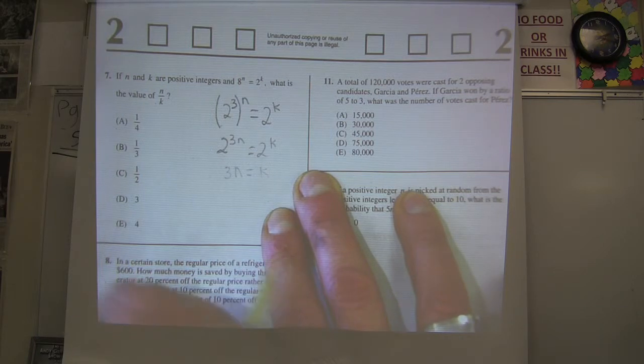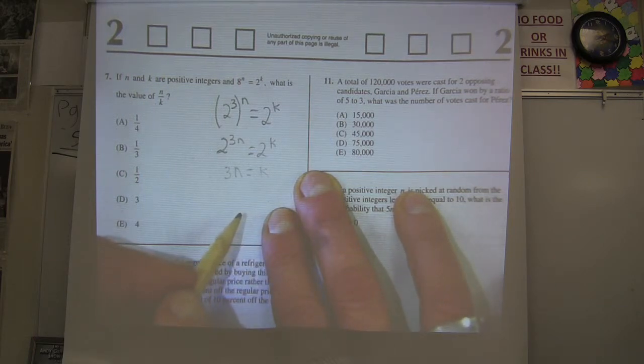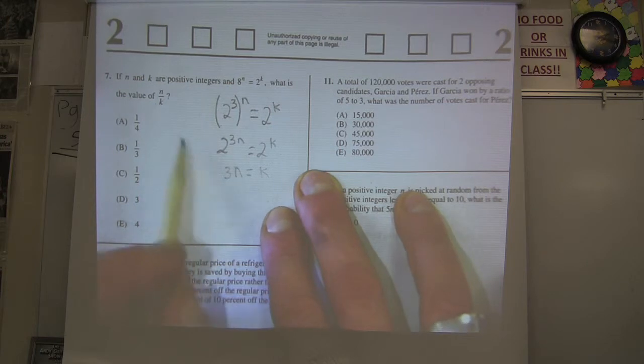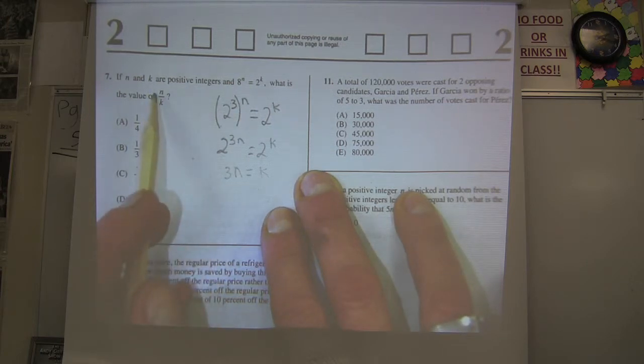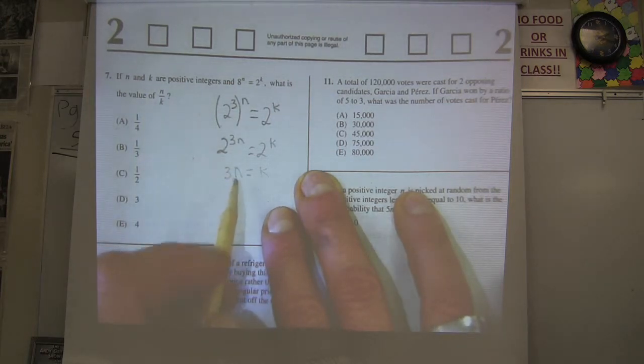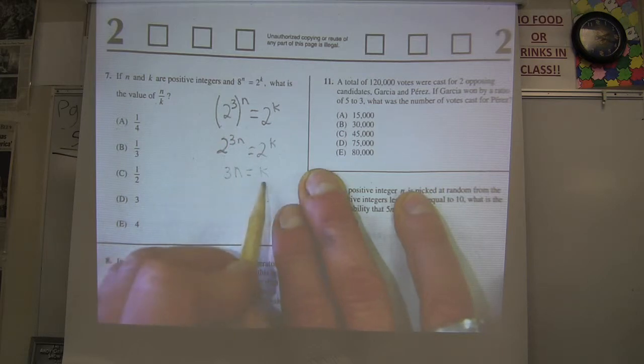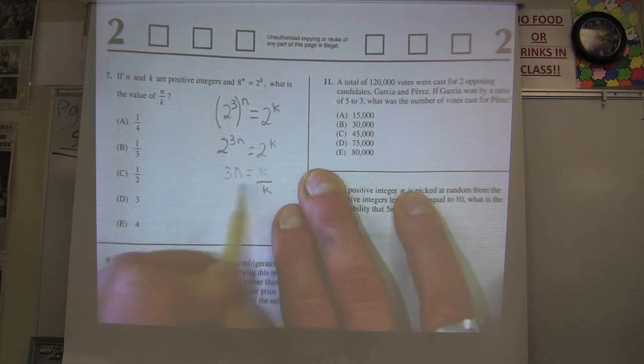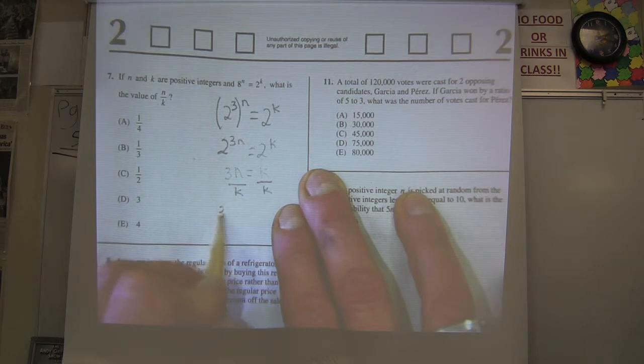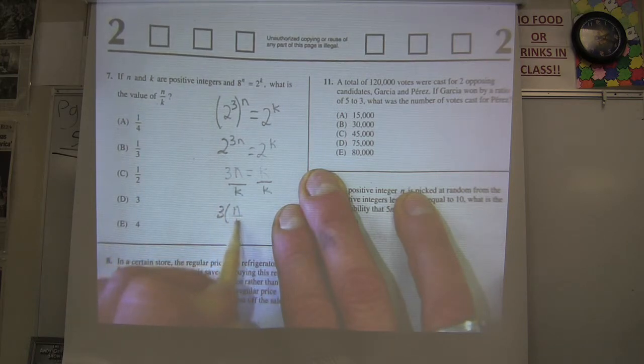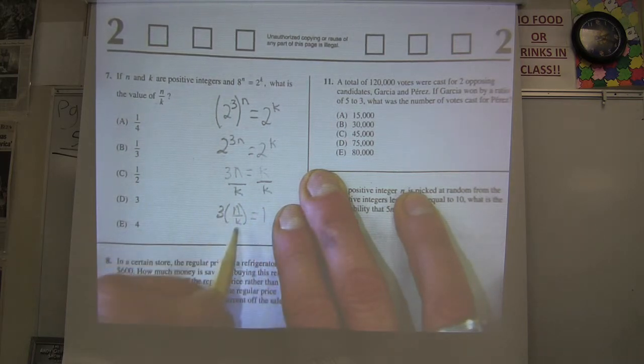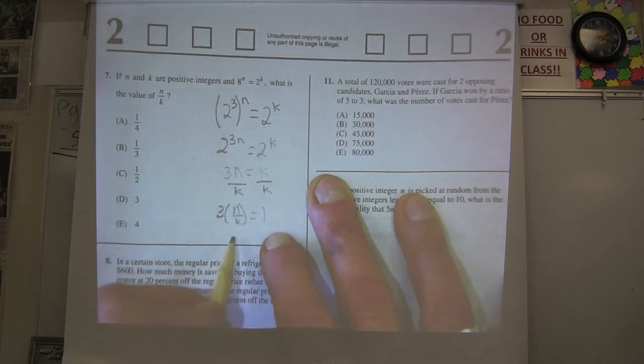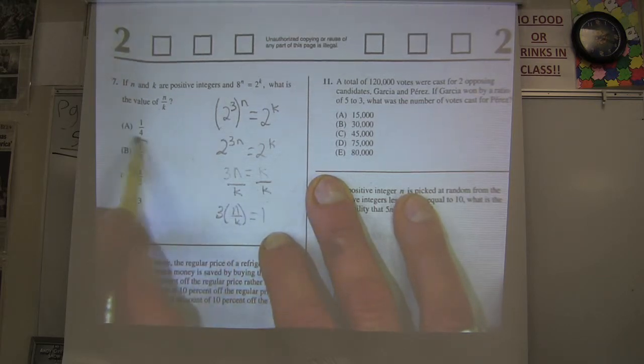Now it's asking for what is the value of n over k. That means I'm going to flip things around and divide both sides by k so I can get my n over k here. I get 3 times n over k equals 1 and then divide by 3. I get n over k equals 1 third. Choice B.